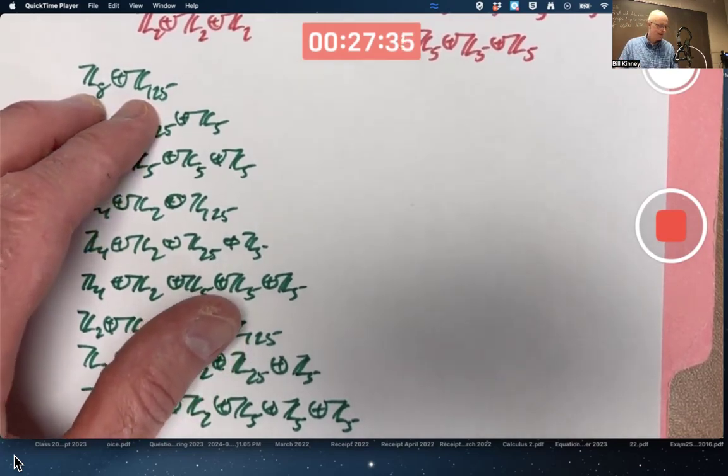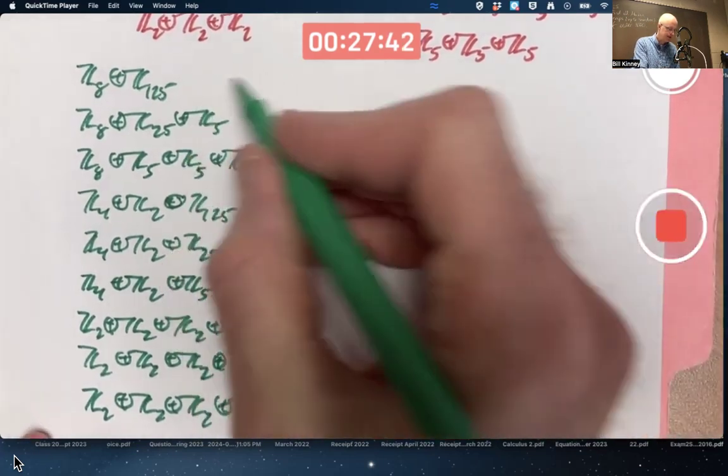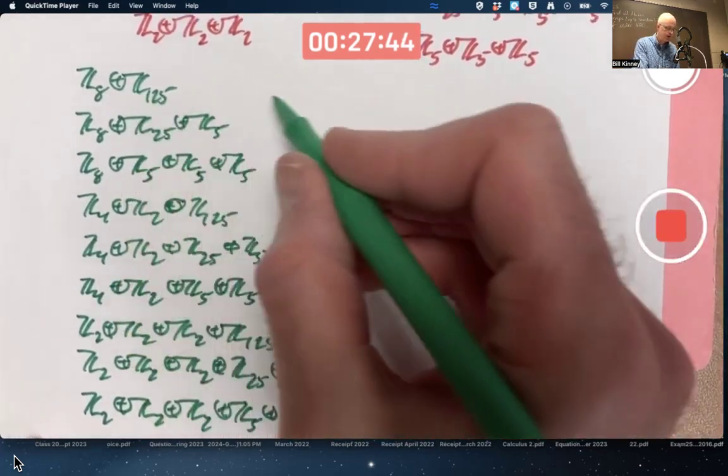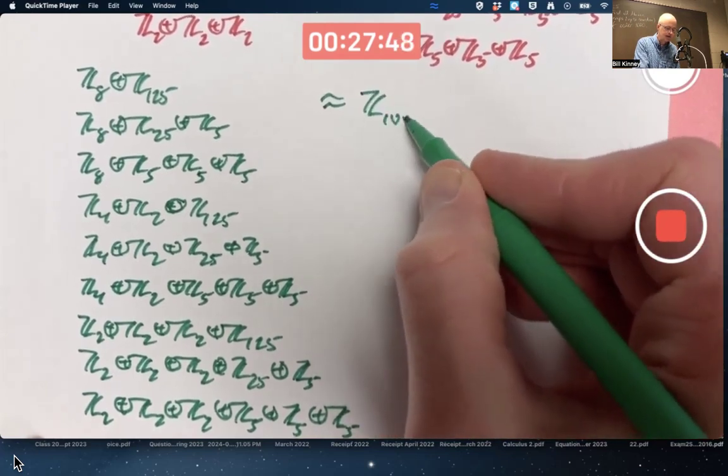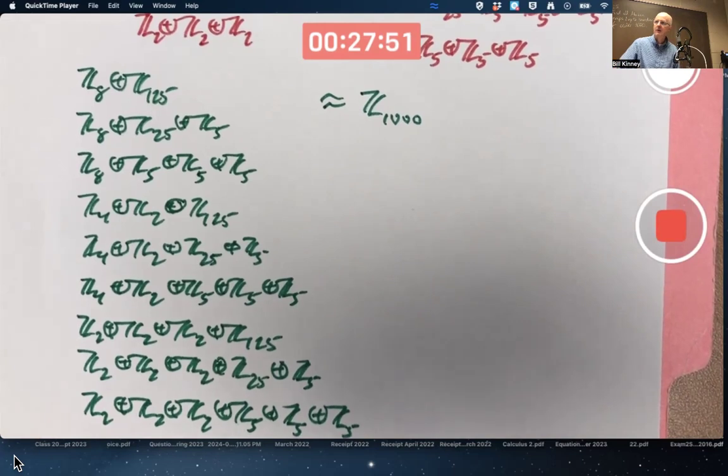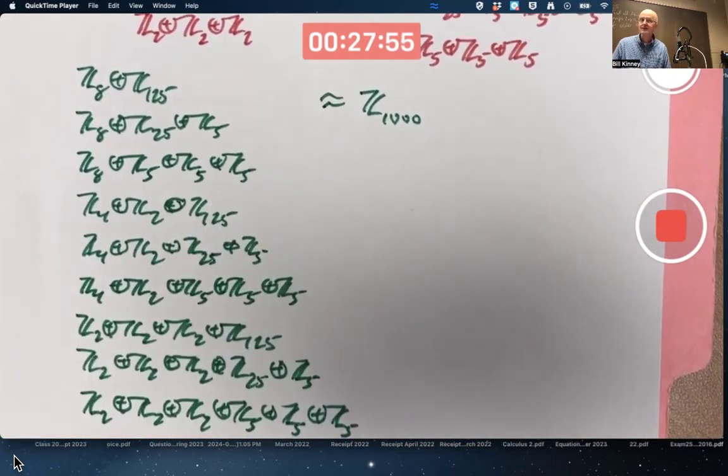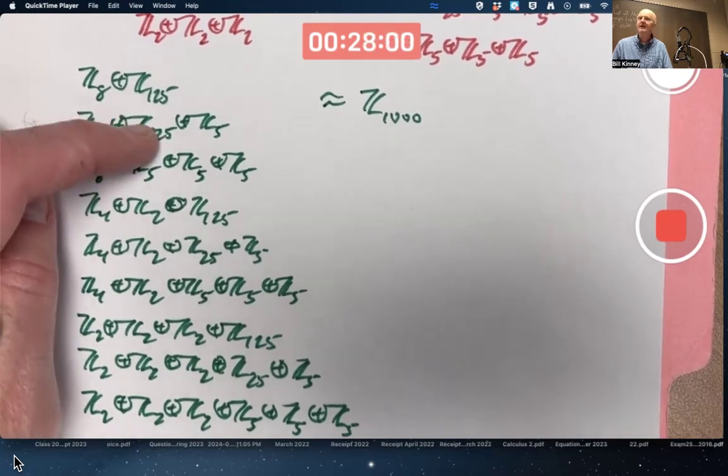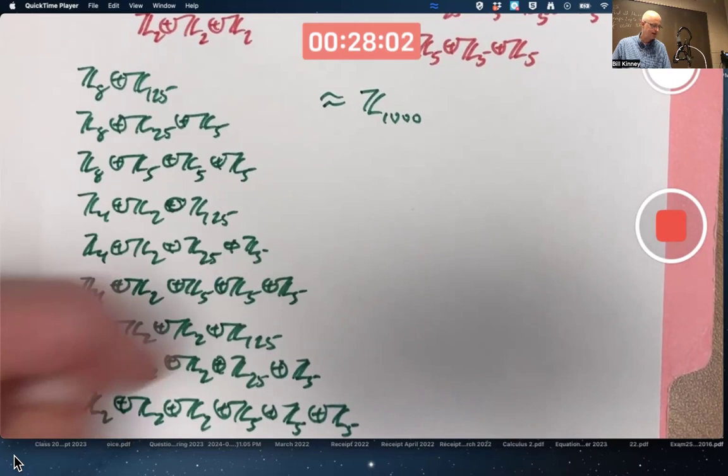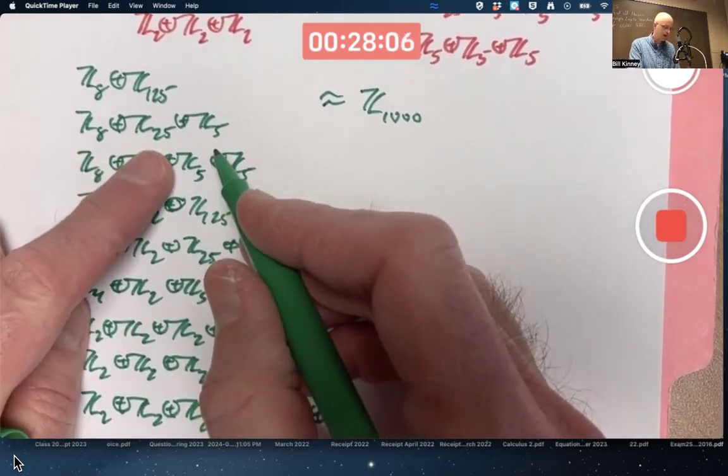You can merge them, so Z8 external direct product with Z125 is actually cyclic. It's isomorphic to Z1000, which maybe you wrote down right away as your first example. But there is a way to write it as an external direct product. Again, 8 and 125 are relatively primed, so I can do that.